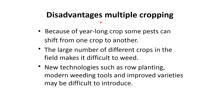Disadvantages of multiple cropping. Because of year-long crops, some pests can shift from one crop to another. A large number of different crops in the same field makes it difficult to weed. New technologies such as row planting, modern weeding tools, and improved varieties may be difficult to introduce.